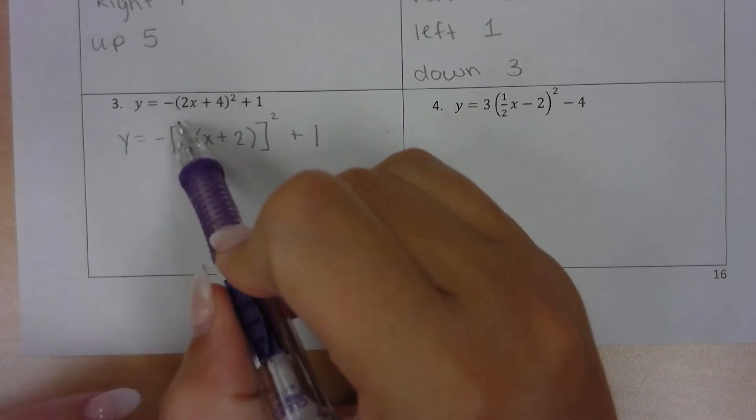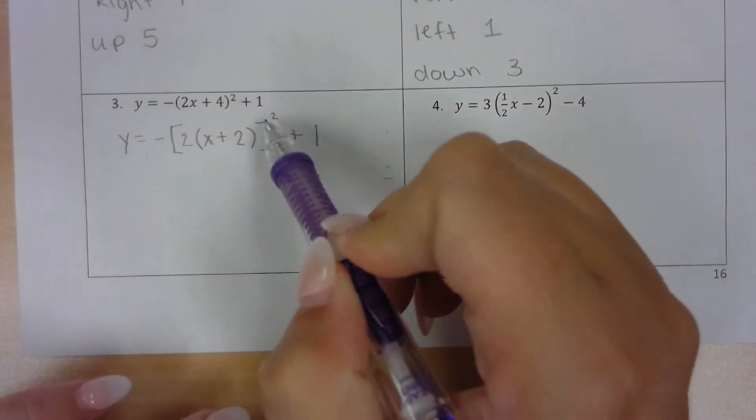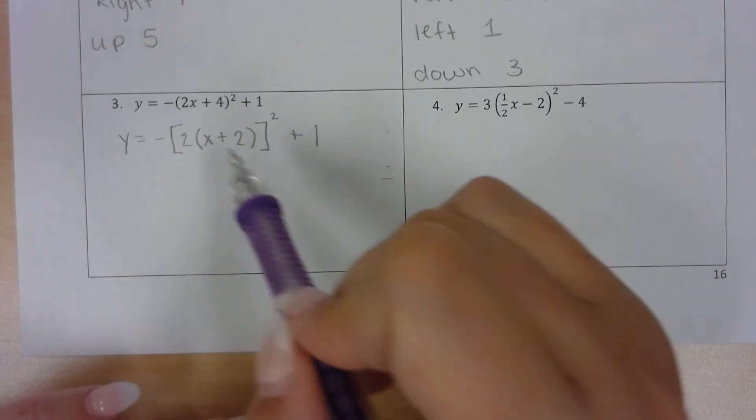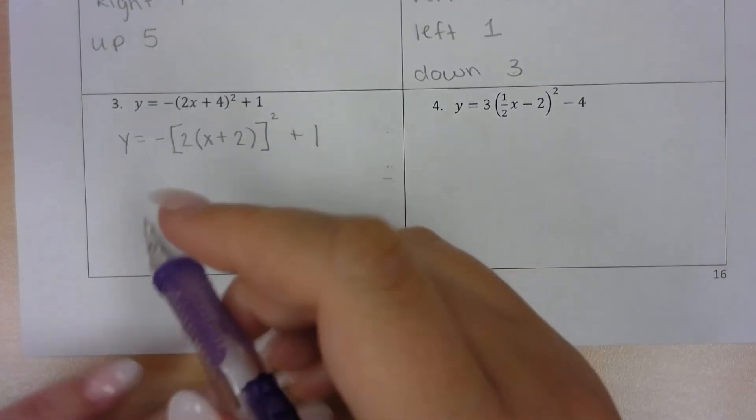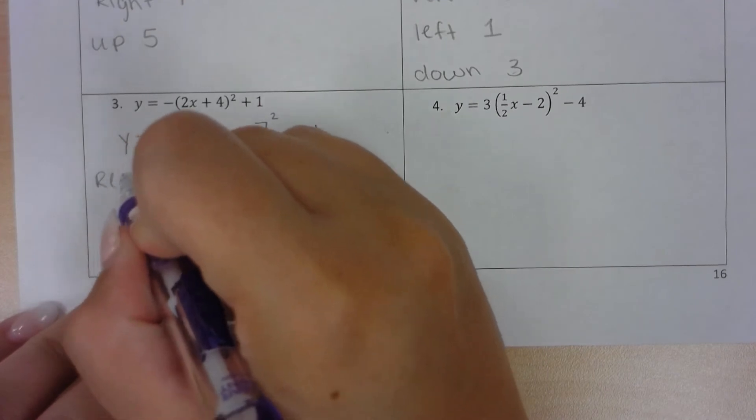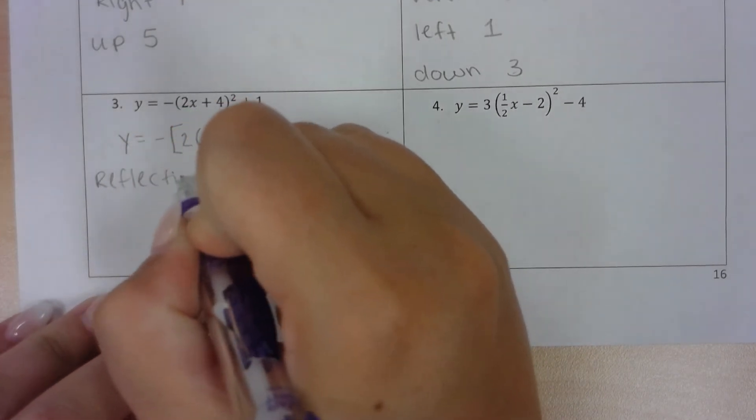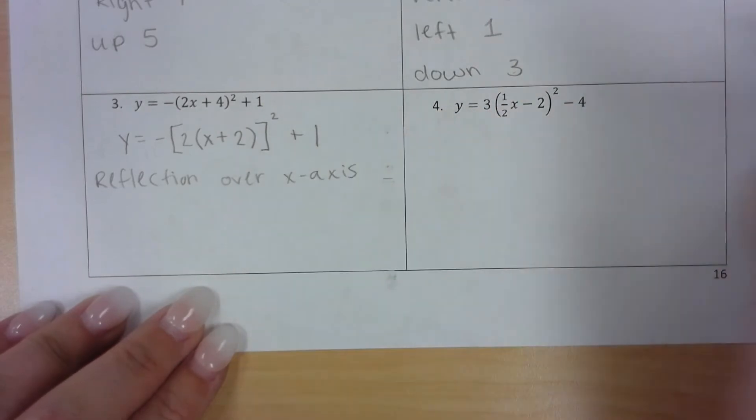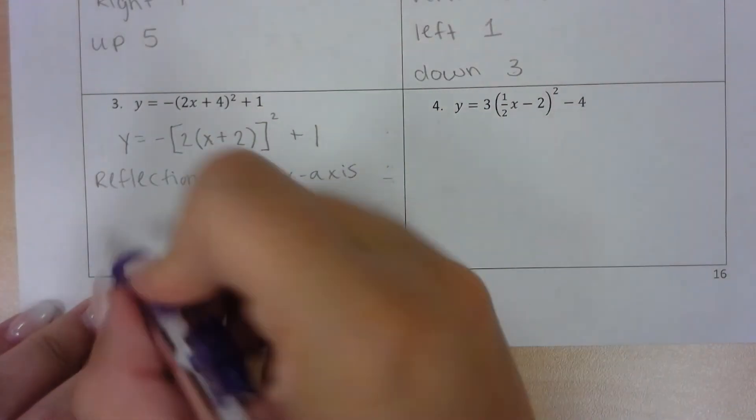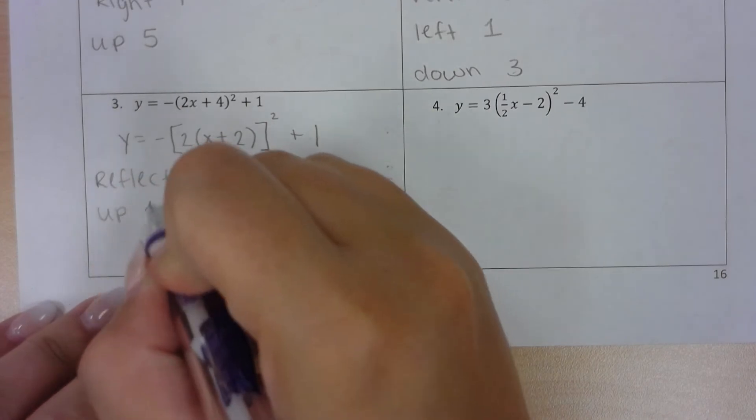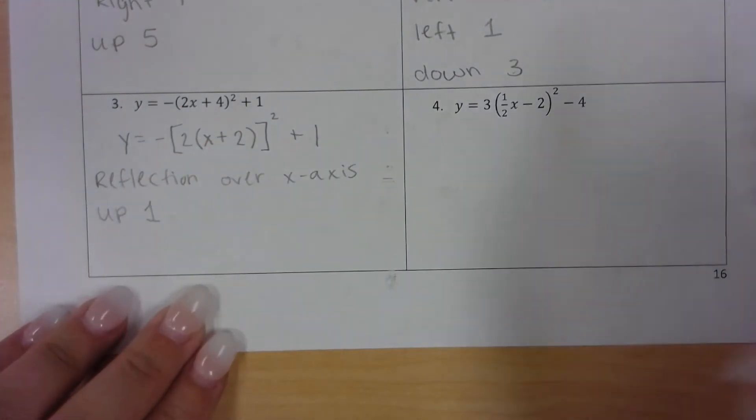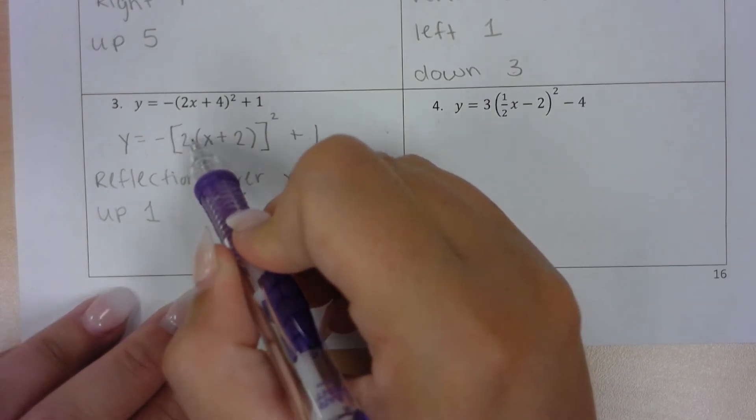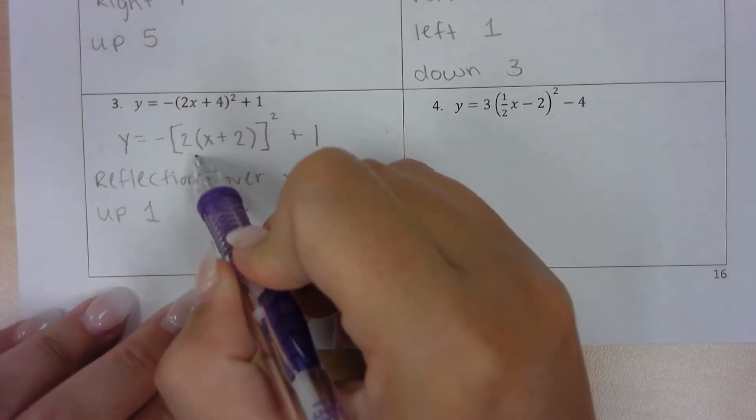Keep in mind, this is still inside of our parentheses, it's just now a bracket. So everything in here is dealing with x. Anything outside of our brackets is dealing with y. So if there's a negative there, we have a reflection over the x-axis, and the plus 1 tells us up 1. Anything inside is dealing with x. So this would be a horizontal expansion or compression, but with x we think opposite.